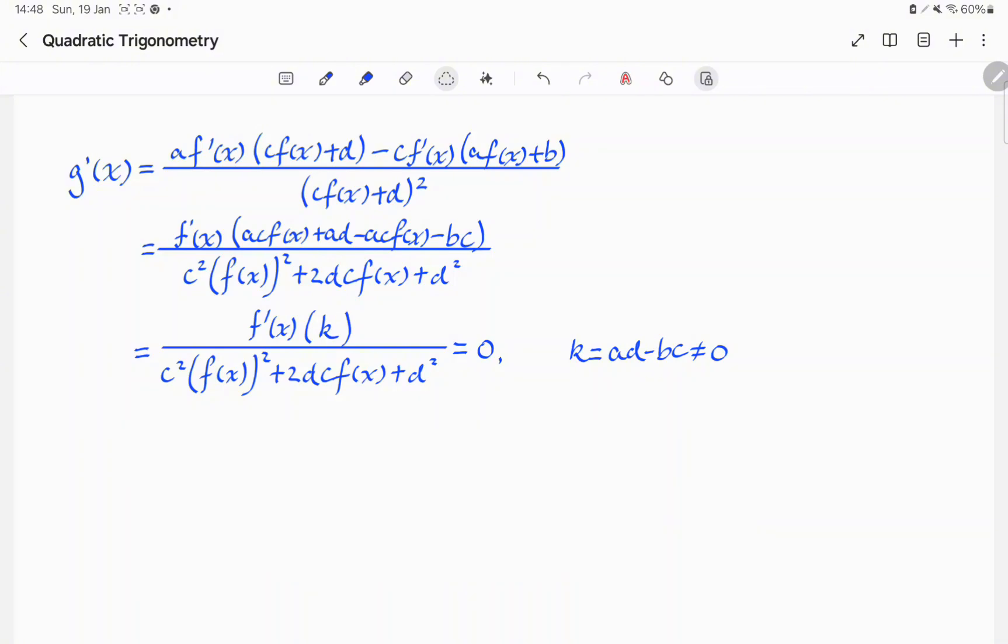This gradient here is equal to 0, and since k is not equal to 0, we have f primed of x is equal to 0. So, g of x shares the same stationary points as f of x.